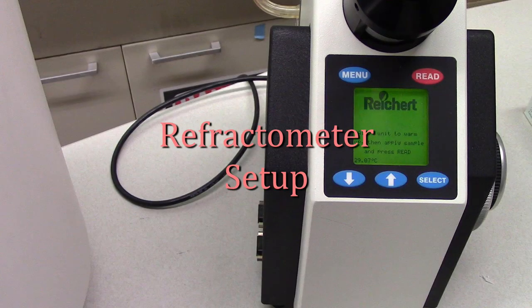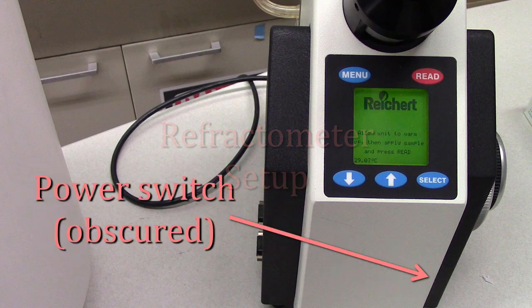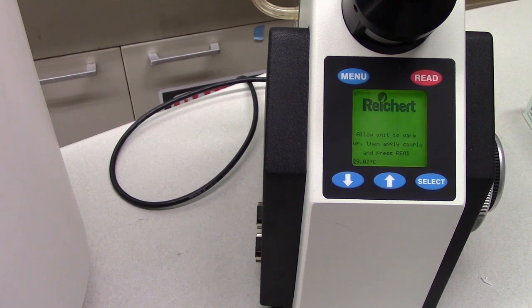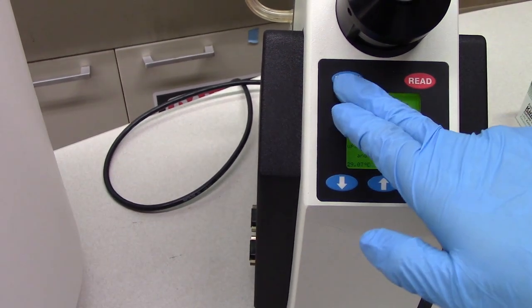Begin the startup by turning the refractometer on. Toggle the switch located on the right side of the unit. Next, check if the refractometer is configured correctly by pressing the Menu button.